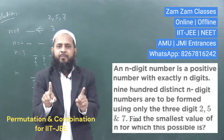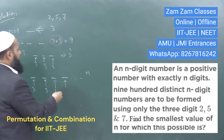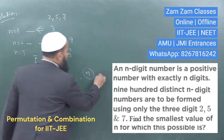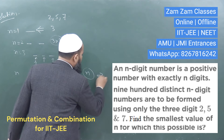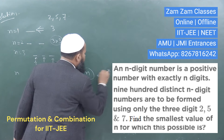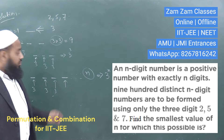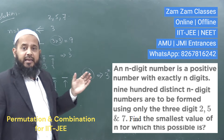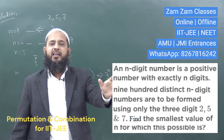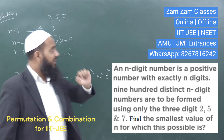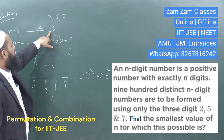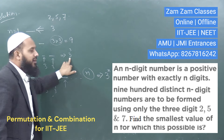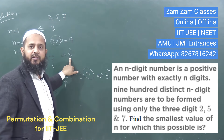So the total number of n-digit numbers that can be formed is 3 to the power n. For example: 3^1 = 3, 3^2 = 9, 3^3 = 27...